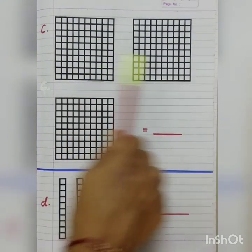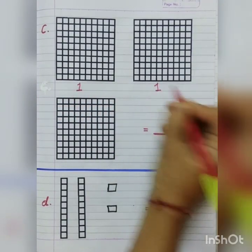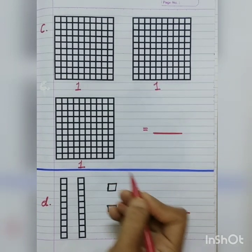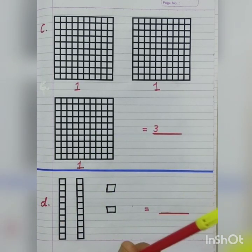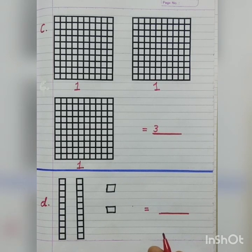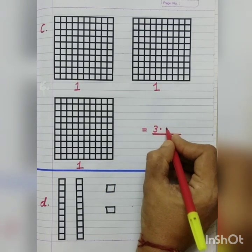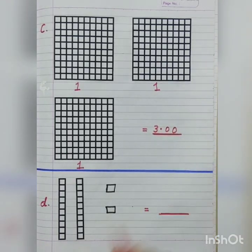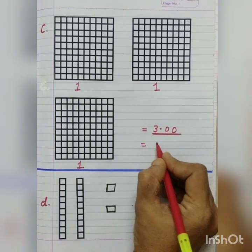Here, we have three grids of 100. So, it is 1, 1, 1, that is three whole. Here, grid of 10 is not given; also, single box is not given. So, now we can write our number as 3 and decimal point. But, as we do not have grid of 10 and single box, we write 0, 0 after decimal point. That is 3.00. It can also be written as 3.